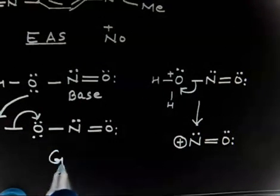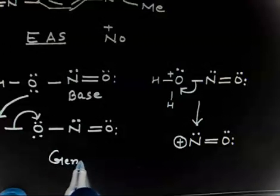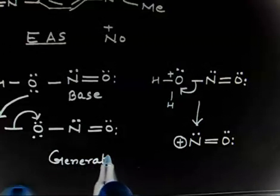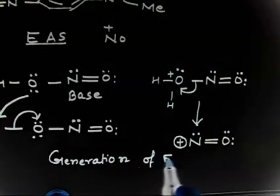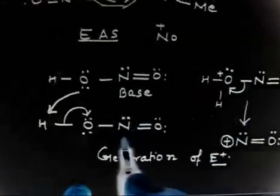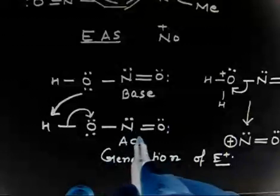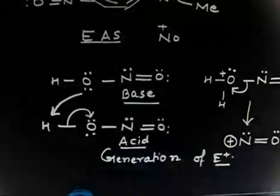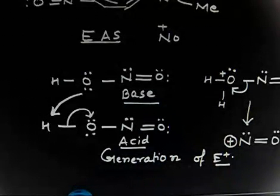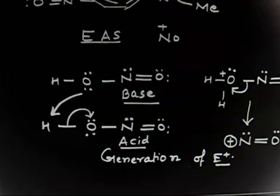So these are the steps for generation of the electrophile E⁺. The important point in this reaction is that one molecule of HNO₂ is acting as a base and another molecule of HNO₂ is acting as an acid. This is the key feature of electrophile generation in this reaction.